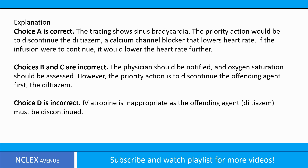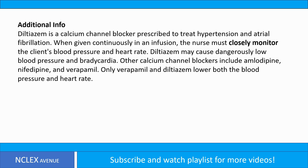Choice D is incorrect. IV atropine is inappropriate as the offending agent, diltiazem, must be discontinued first. Additional info: Diltiazem is a calcium channel blocker prescribed to treat hypertension and atrial fibrillation. When given continuously in an infusion, the nurse must closely monitor the client's blood pressure and heart rate, as diltiazem may cause dangerously low blood pressure and bradycardia. Other calcium channel blockers include amlodipine, nifedipine, and verapamil. Only verapamil and diltiazem lower both blood pressure and heart rate.